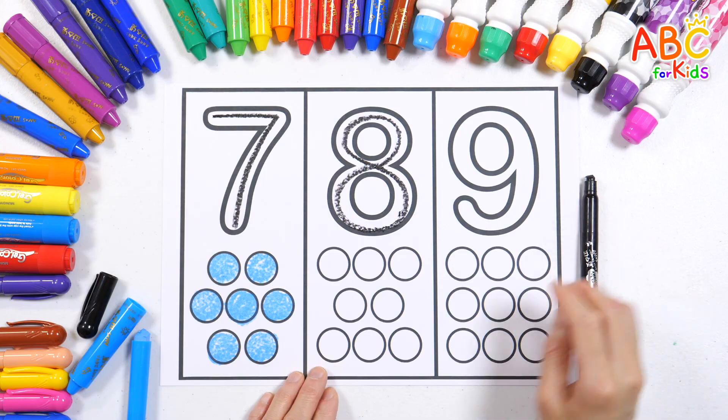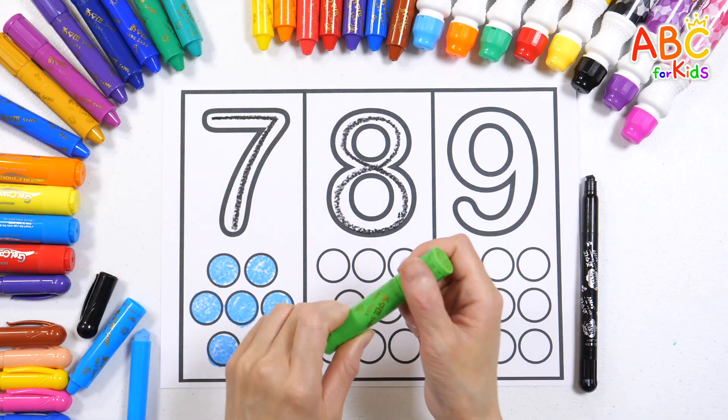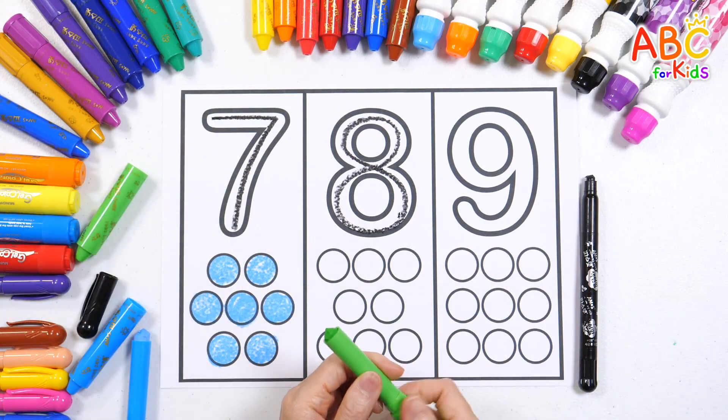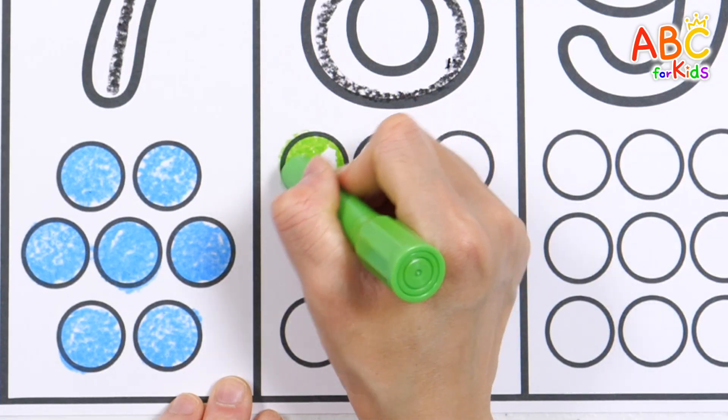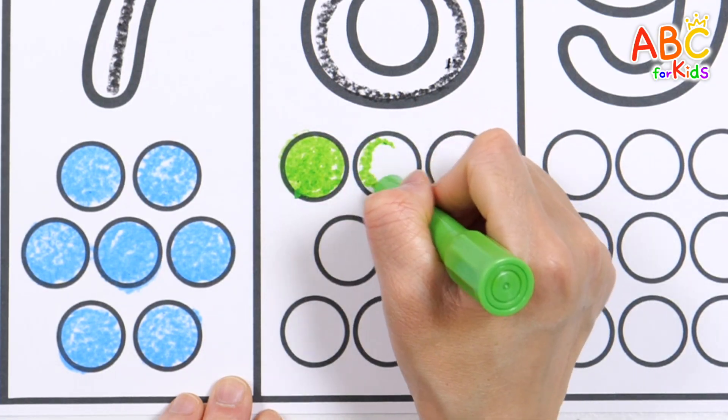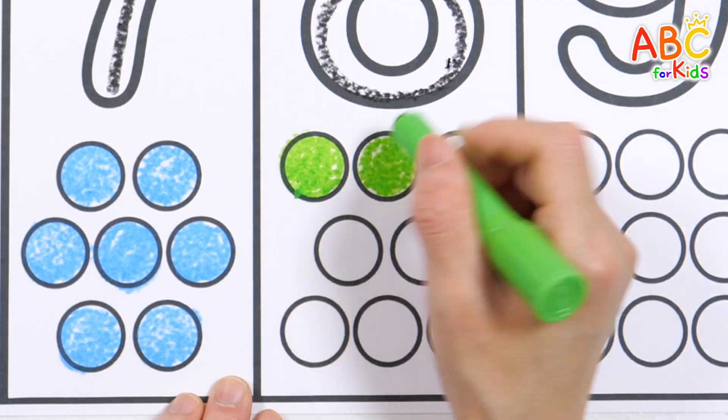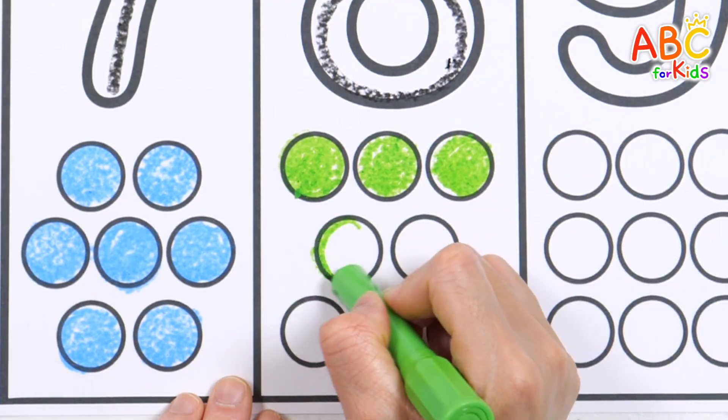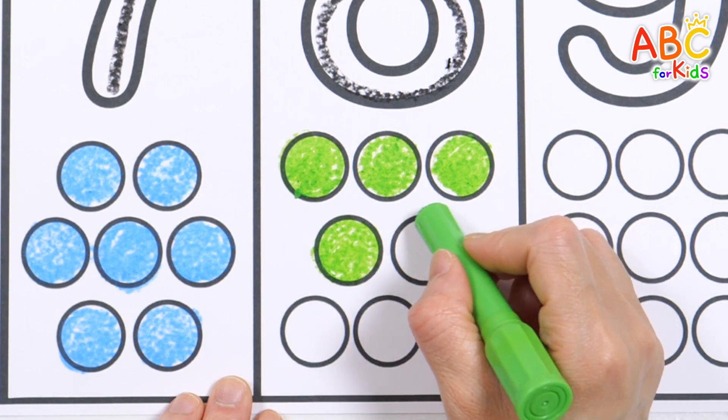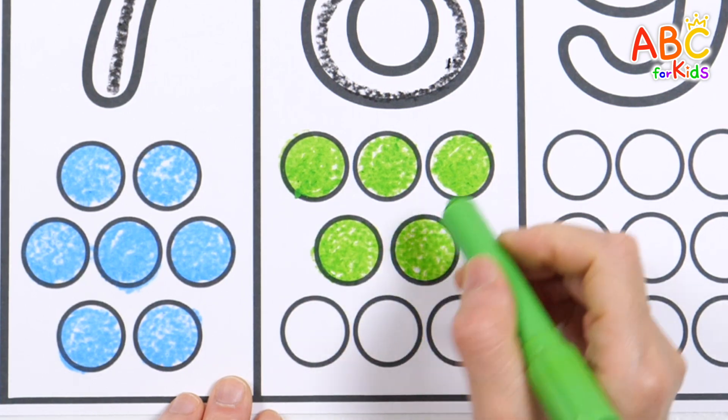Eight. Let's color eight circles with a lime crayon. Red and round and juicy, too. Take a bite, it's good for you. A is for apple. Two. Three. Four.